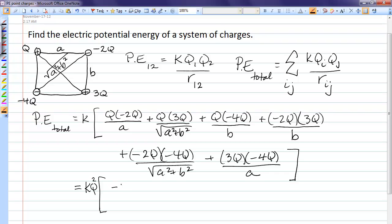Then I'm left with negative 2 over A, plus 3 over the root, minus 4 over B, minus 6 over B, plus 8 over the root, minus 12 over A.